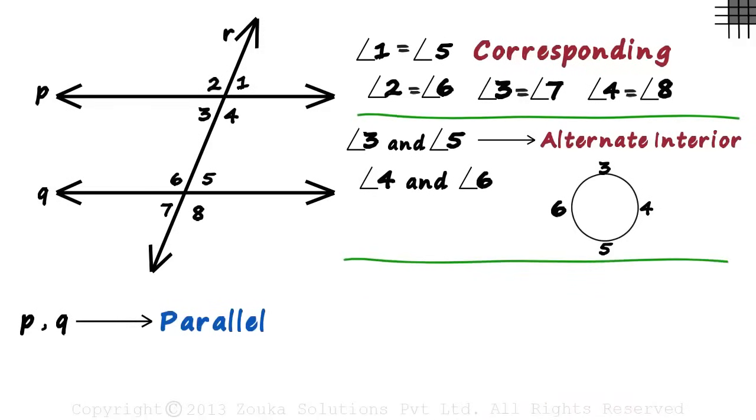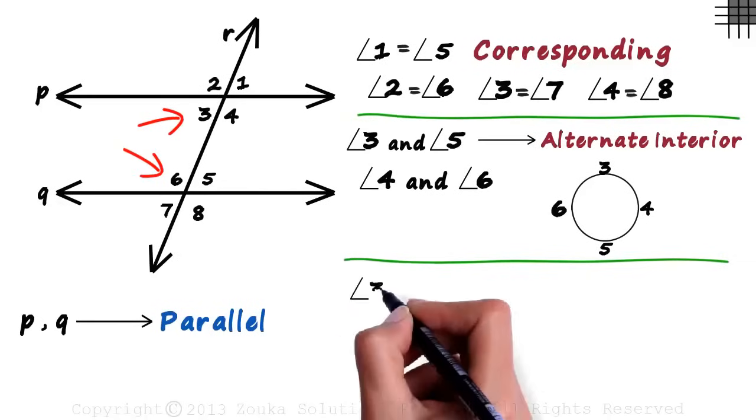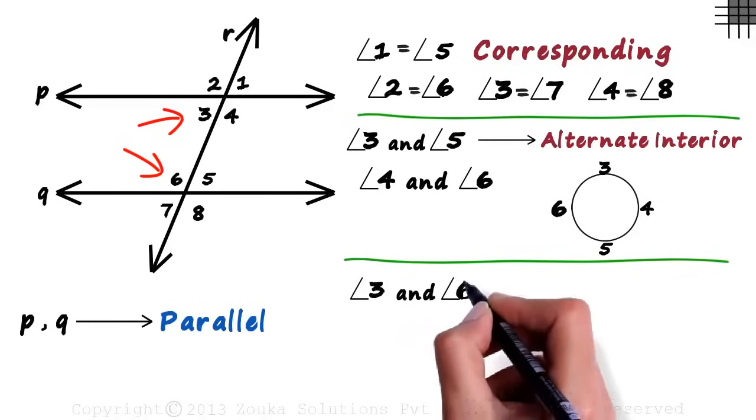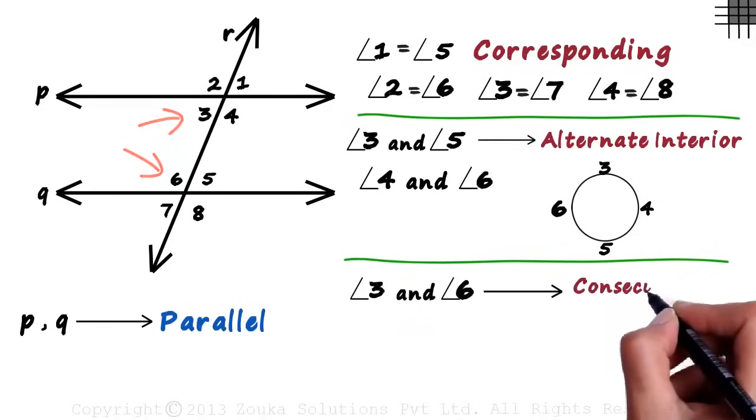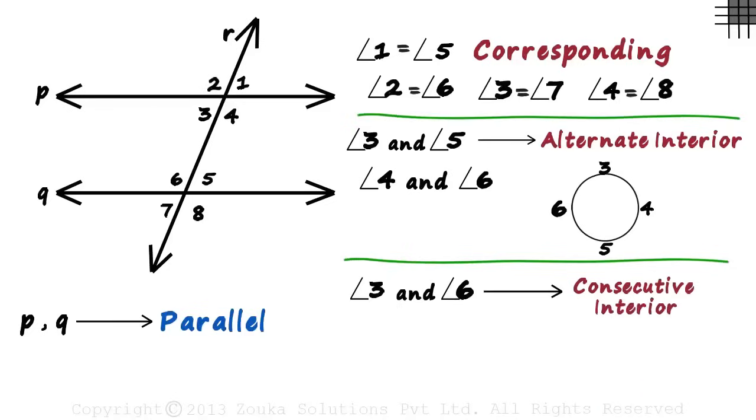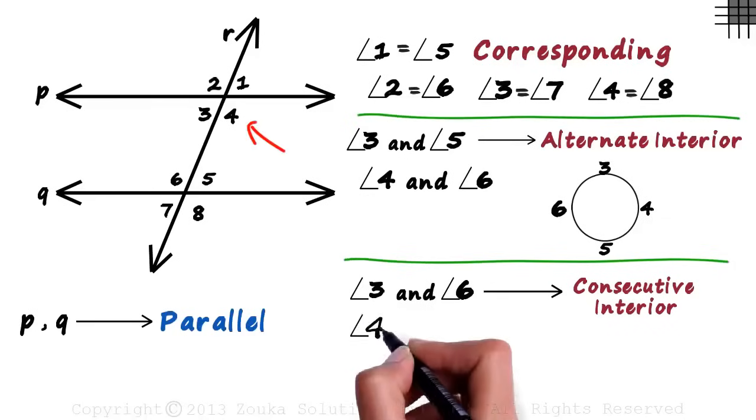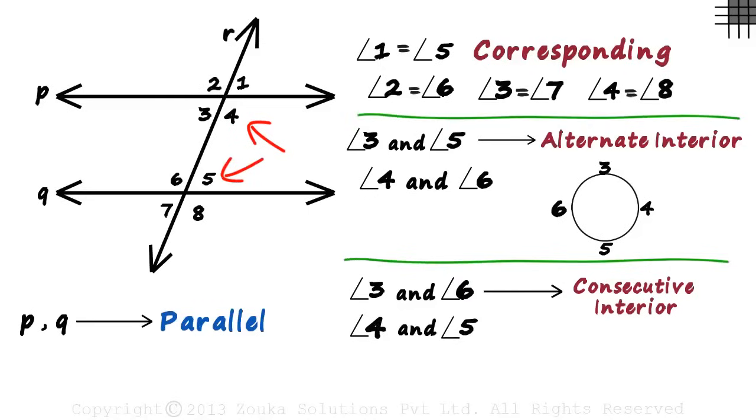This was the first type of interior angles. The second type is a pair in which the angles are next to each other on the same side of the transversal, like angle three and angle six. They are called consecutive interior angles. Look at the figure now. Do you see any other pair of consecutive interior angles? Yes, with the same logic, even angles four and five are consecutive interior angles.